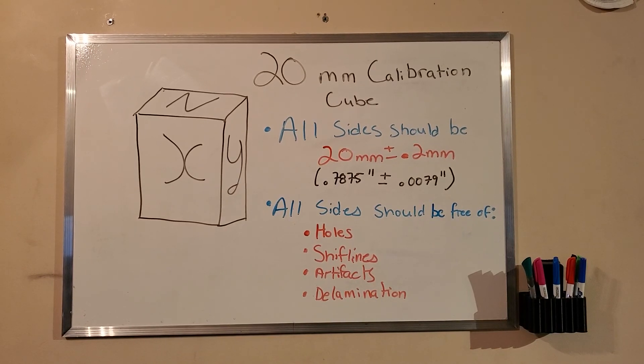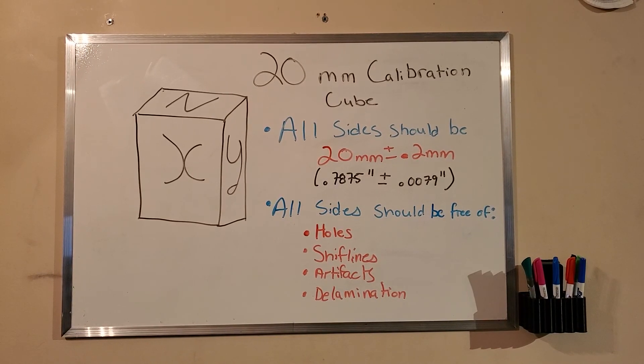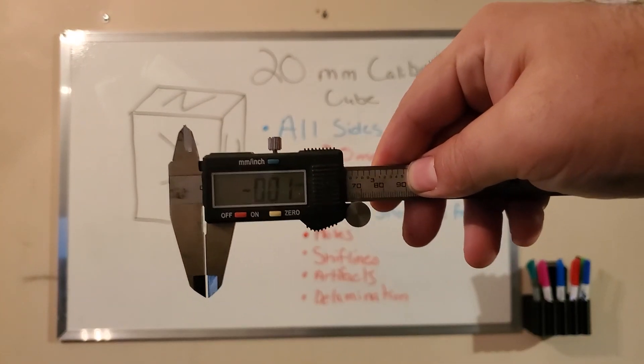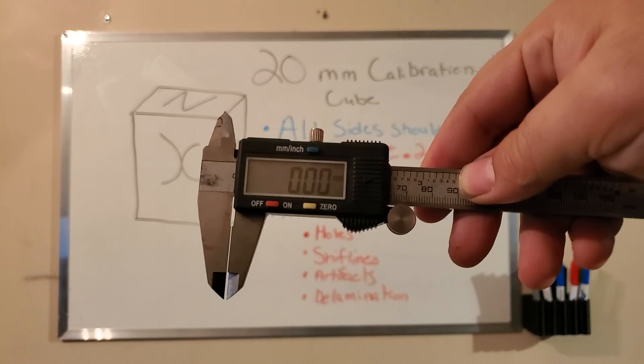So before we check our 20 mil calibration cube, we have to know what we're going to check with. So this is a vernier or a caliper, depending on which part of the world you're in. There's a wide variety of names for it, but they all function about the same.